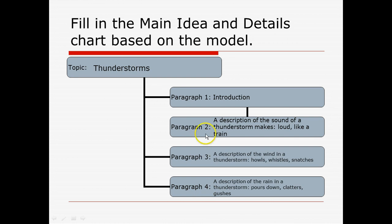Within the writing model, paragraph two includes a description of the sound a thunderstorm makes — it's loud, like a train. 'Like a train' is figurative language that helps us understand what a thunderstorm sounds like. In paragraph three, you can see very good descriptive words: it howls, it whistles, it snatches — really helping us understand the wind. And in paragraph four, the rain pours down in sheets, it clatters and it gushes — really good descriptive words to describe the thunderstorm.